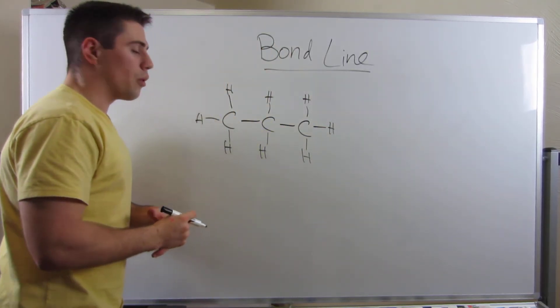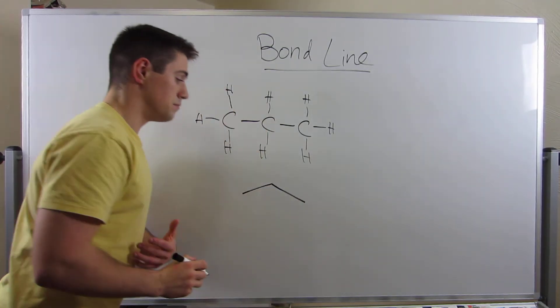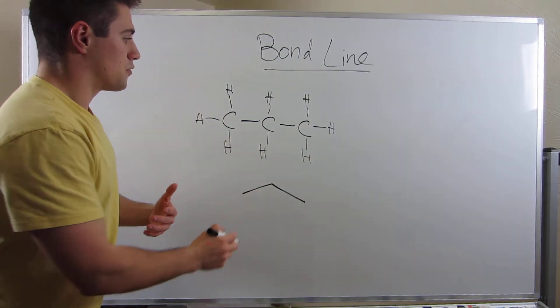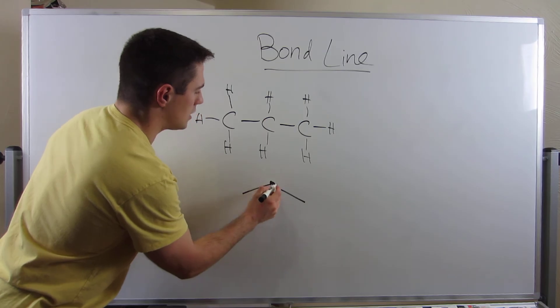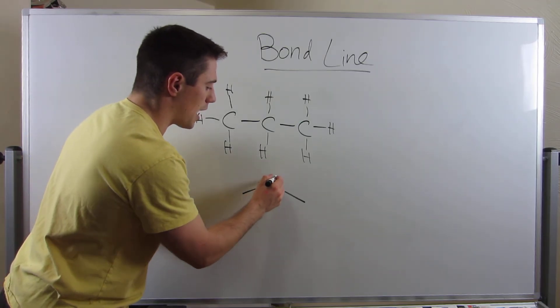Okay? What if we wanted to draw that in bond line? Done, right? Because if we look at the middle carbon, he has two carbon-carbon bonds, two carbon-carbon bonds, and two implied hydrogens.